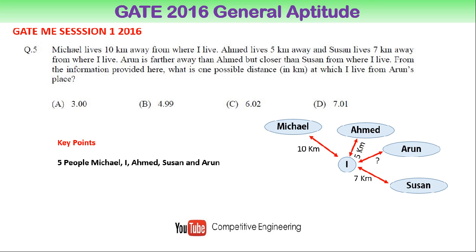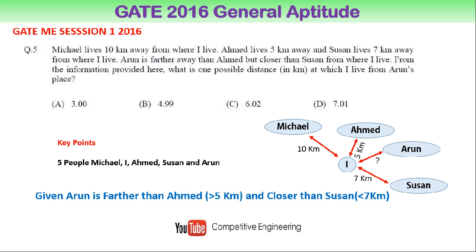The key information in the question is: Arun is farther away than Ahmad but closer than Susan from where I live. Arun is farther than Ahmad, who is at a distance of 5 km, so Arun's distance is more than 5 km. Arun is closer than Susan, who lives at 7 km, so Arun's distance is less than 7 km. Therefore, Arun's distance should be between 5 km and 7 km.